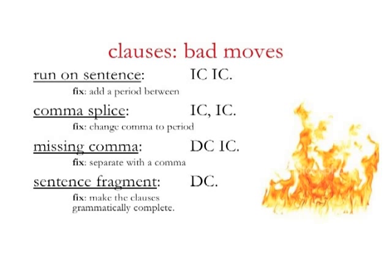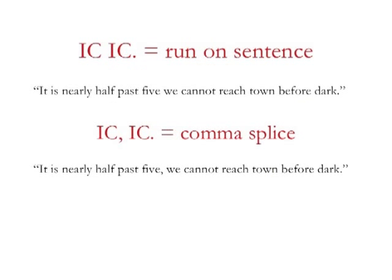Mistake number three: the missing comma. Generally, you need a comma to separate a dependent clause from an independent clause if the dependent clause comes first. Mistake number four: the sentence fragment. Whenever somebody puts a dependent clause by itself in a sentence, they've written a fragment — it is not a complete thought. Every sentence needs at least one independent clause. For example: 'It is nearly half past five, we cannot reach town before dark' is a run-on sentence — fix it with a period, semicolon, or comma-conjunction combo. 'It is nearly half past five, we cannot reach town before dark' with only a comma is a comma splice — fix it by replacing the comma with a period or adding a conjunction.